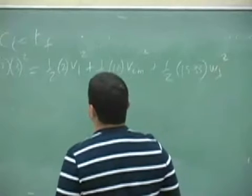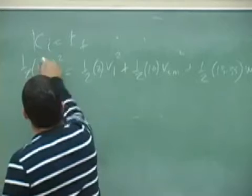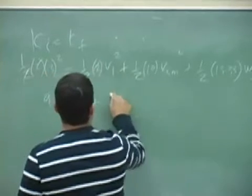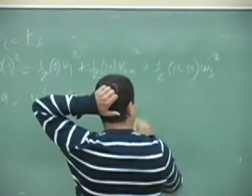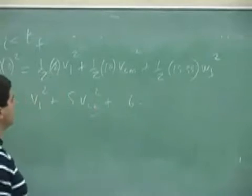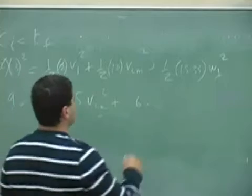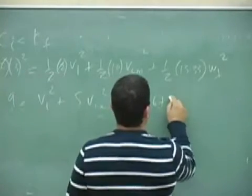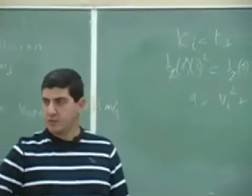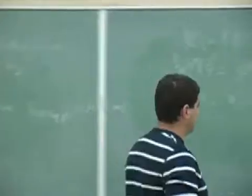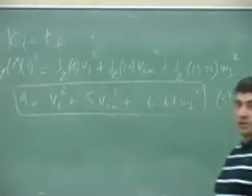So this one now becomes 9 is equal to v1 squared plus 5 v center of mass squared plus this one is 6.67, right? You divide that by... right? Okay, so that's what I'm making, that's my third equation. Okay, so now I'm going to solve for these three unknowns.